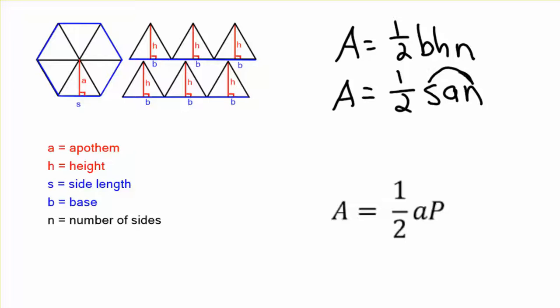Now, number of sides times each side length is going to give you the distance all the way around your polygon. That's the perimeter. That's what capital P is. Because s times n, side length times number of sides, is perimeter.